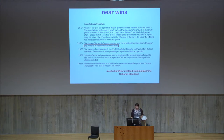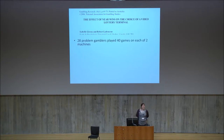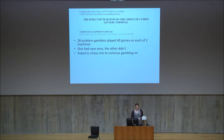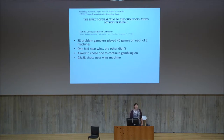We've done some research looking at what near wins actually do. This is a nice study from the literature that we took as our starting point. They got 28 problem gamblers who played 40 games on each of two machines. One of the slot machines had near wins and the other one didn't. Then they asked which one they would continue gambling on, and most of them chose the one that had the near wins. That's a really nice start suggesting these are something important and that it's a good idea to legislate. So we created a simulation to play around a little more with when the near wins happened and how they were programmed.